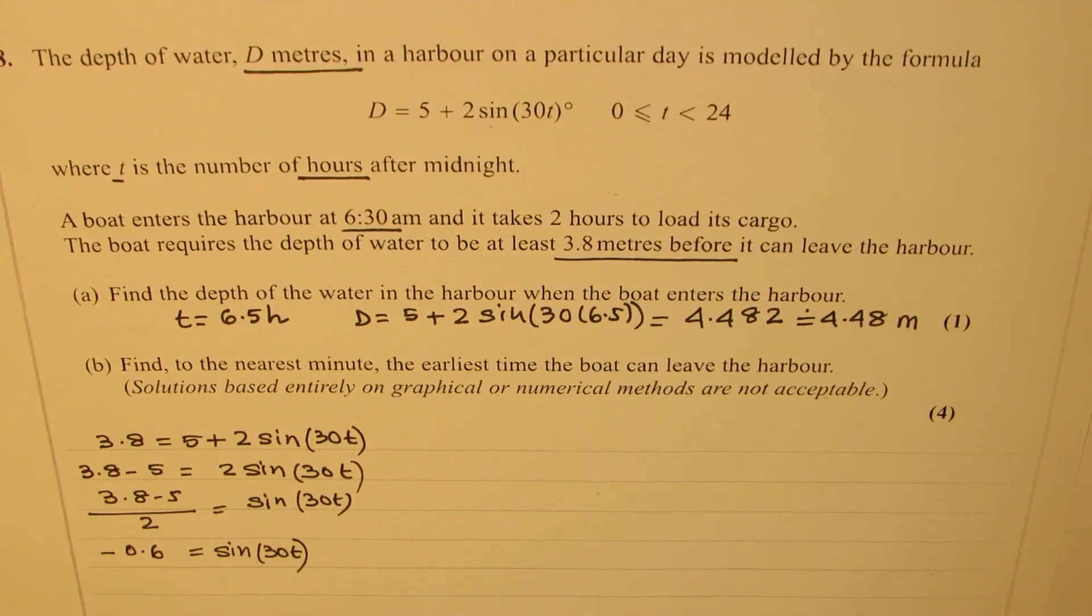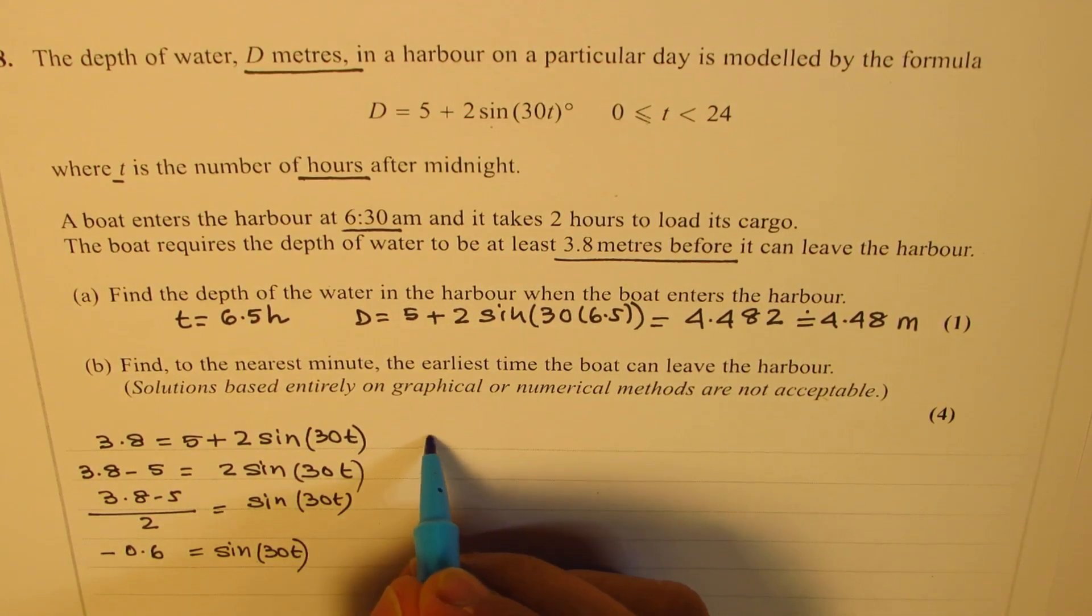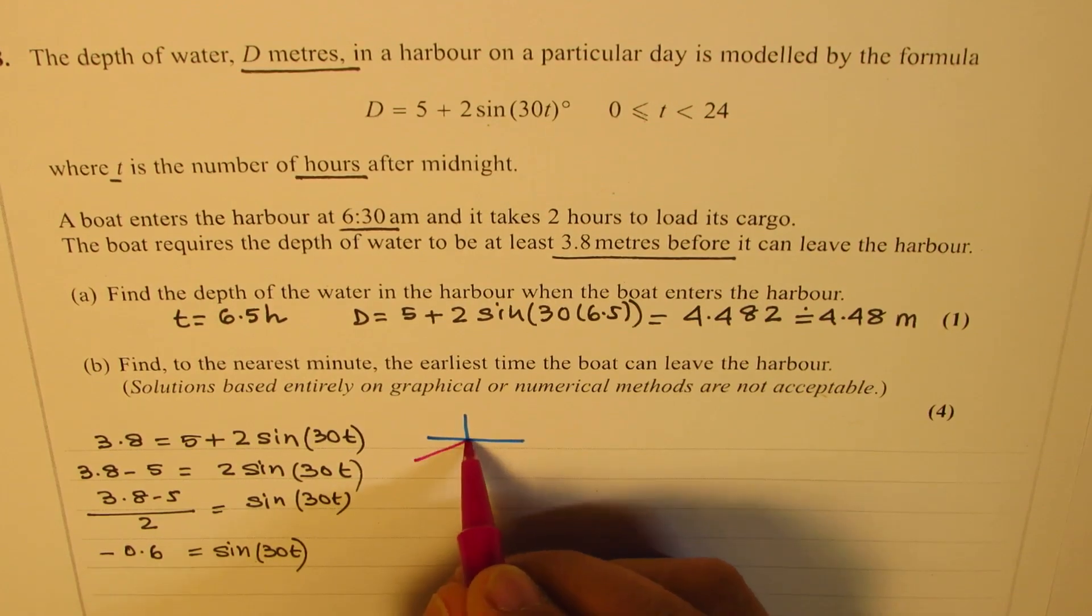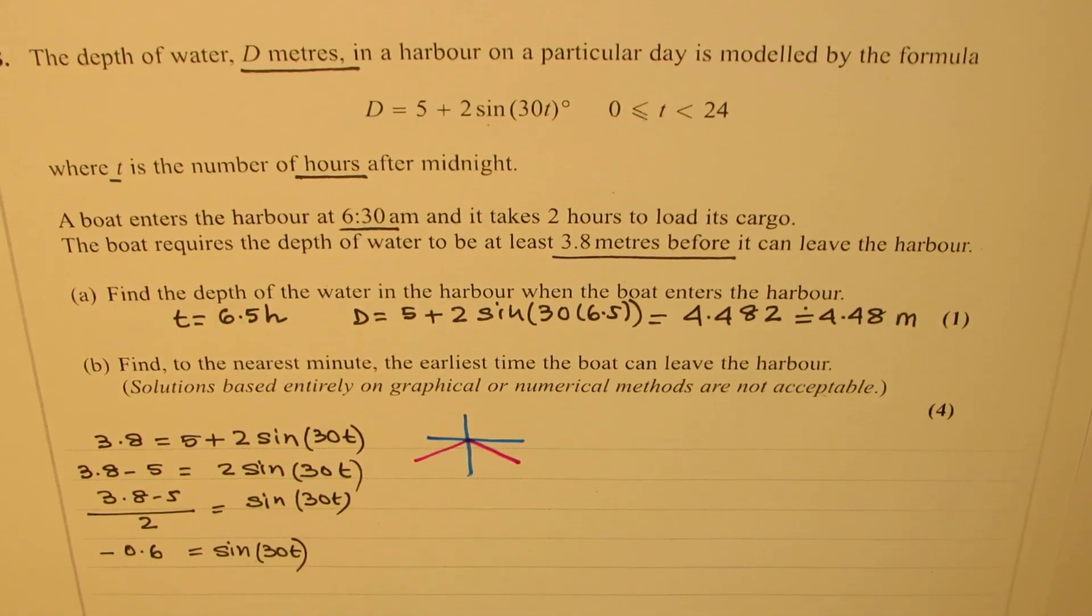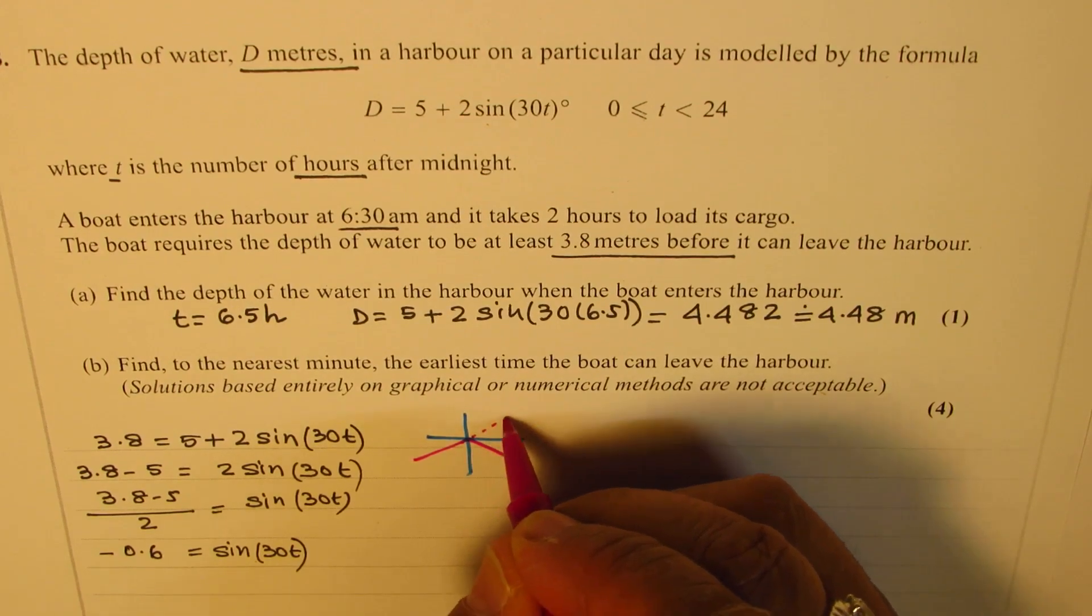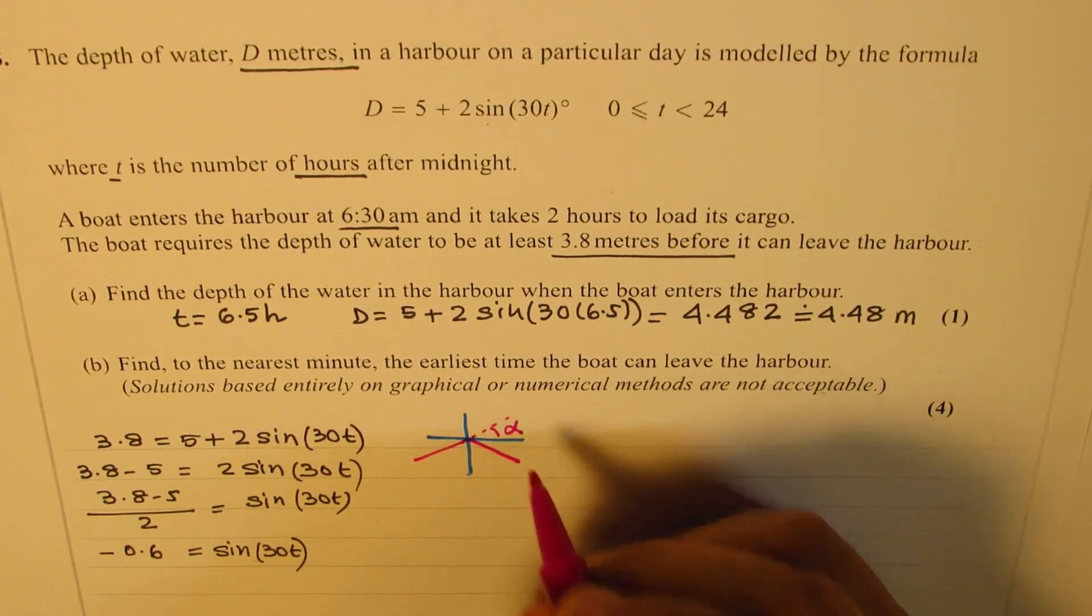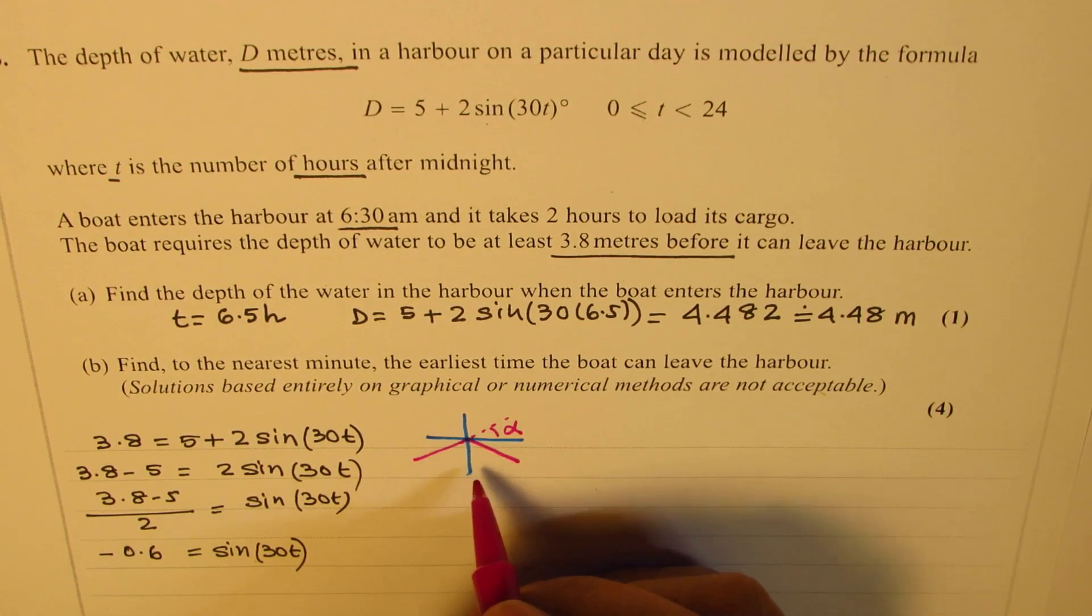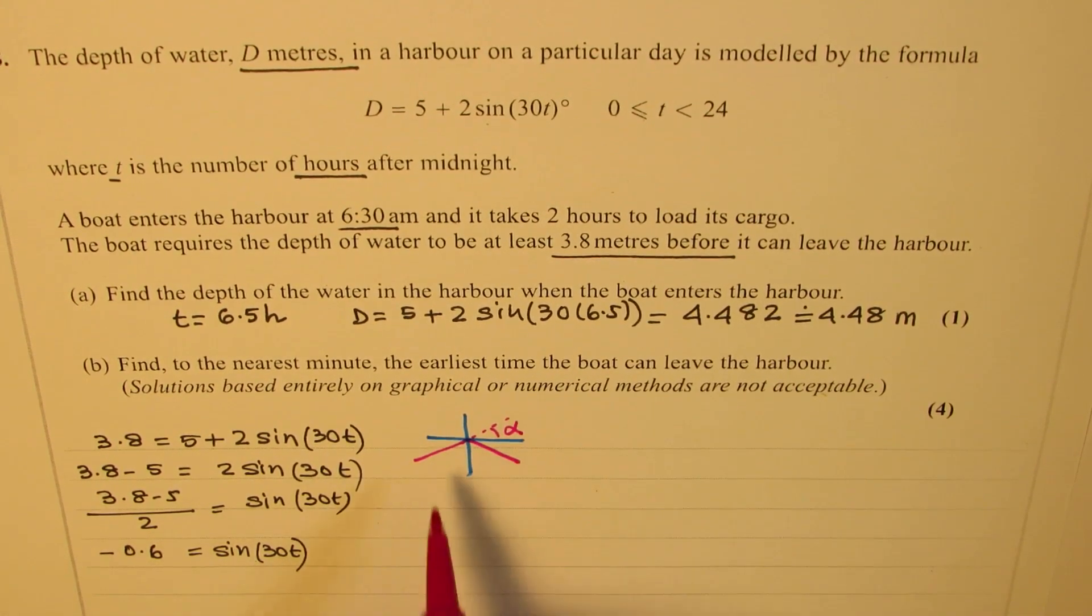Now minus means that we have two solutions. Sine is negative in quadrant 3 and in quadrant 4. So what we'll do here is we'll find the acute angle alpha for which we have the value 0.6 and then we can find both these values.